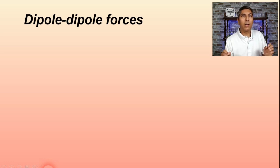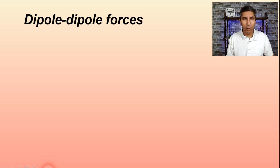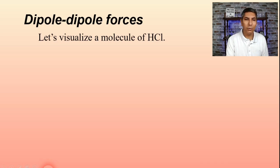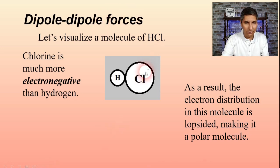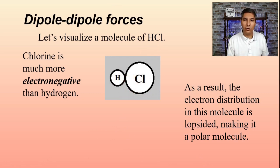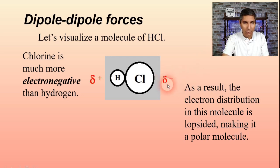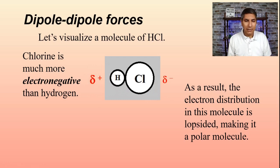In the last video we talked about London dispersion forces. In this video we're going to add in several other important intermolecular and interparticle forces. The first one is called dipole-dipole forces. Let's imagine we have a molecule of hydrogen chloride, HCl. We know that chlorine is much more electronegative than hydrogen, so there's a lopsidedness to the electron distribution. This is a polar molecule, as we learned back in unit 2.